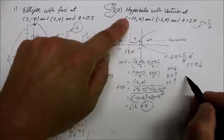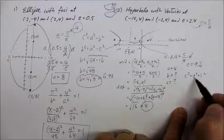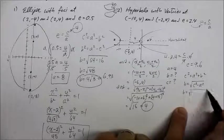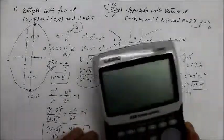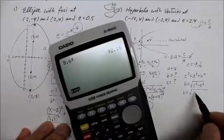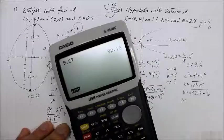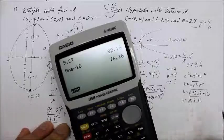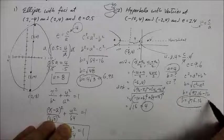To find b, remember for a hyperbola: c squared equals a squared plus b squared. Solving for b: b equals square root of c squared minus a squared. c is 9.6, so 9.6 squared is 92.16, minus a squared which is 16. So 92.16 minus 16 equals 76.16, and b equals square root of 76.16. That's my b.